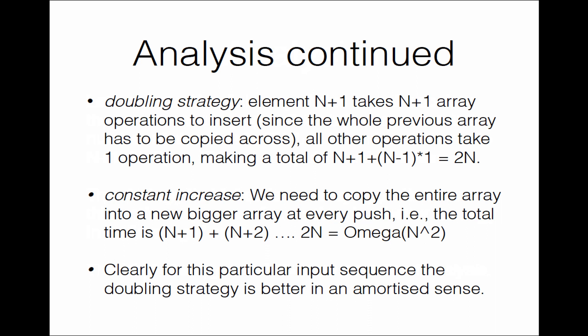However, for the constant increase strategy, we need to copy the entire array into a new bigger array at every push. When the (n+1)-th element comes, we need n+1 steps; then for the next element we need n+2 steps; then n+3 steps; and so on up to 2n. This sum is Ω(n²) — it is the sum of the first 2n natural numbers minus the sum of the first n natural numbers, so it is Ω(n²).